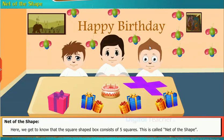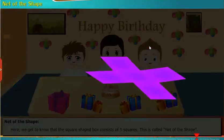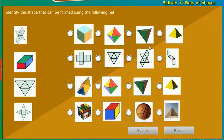Here, we get to know that the square shape box consists of 5 squares. This is called net of the shape. Let us do an activity to identify the nets of 3D shapes.